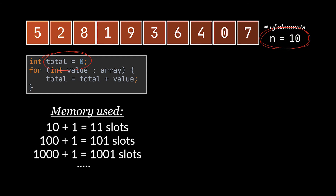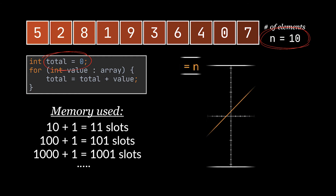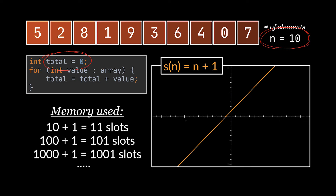You see the pattern: as our array grows, the 10 representing the number of integers will grow to become n. So if we have n integers in the array, the space complexity of our code will be n + 1 — hence the 101, the 1001. If we plot the variation of memory with respect to n, we obtain S(n) = n + 1. Keep this result in mind and let's move on to the time taken by our code.